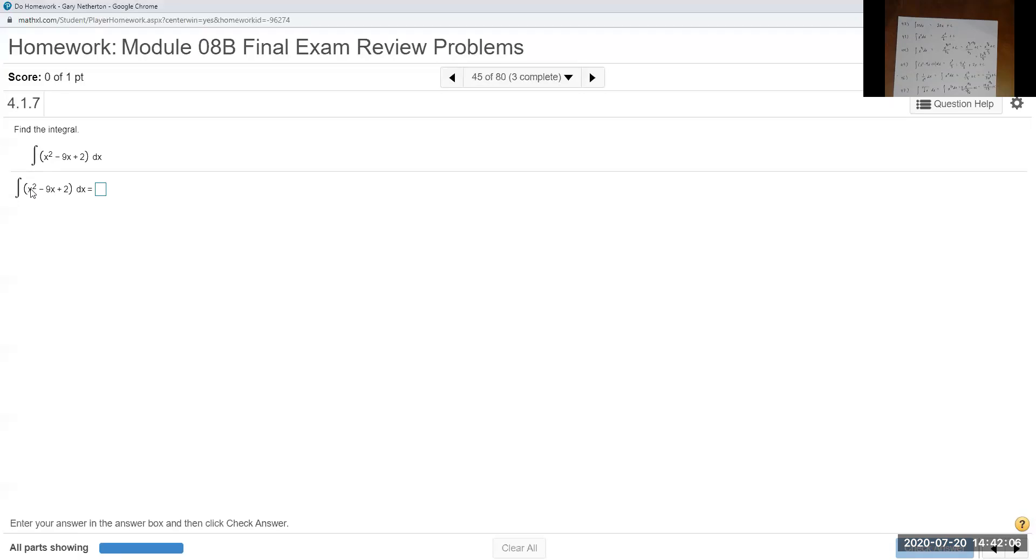All right. The next one, this is the three different terms. You do one at a time. First term was x cubed over three, plus, actually, I'll put a subtract here. Nine x squared over two, plus 2x plus c.